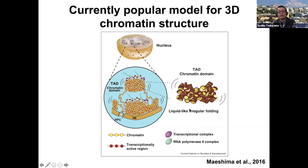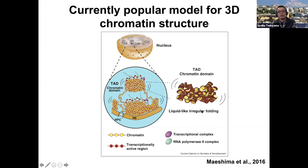This is a very fundamental question. We believe that if you can get any additional information about how nucleosome fibers fold in vivo, any information would be a very significant step forward. Since chromatin is way more compactly folded in quiescence, this is a really interesting system to test how different chromatin folding might be in quiescent cells compared to actively dividing cells. And another question was: if they fold differently, is there any additional function to that kind of chromatin folding beyond compact storage? Those are the questions Sarah has been investigating.